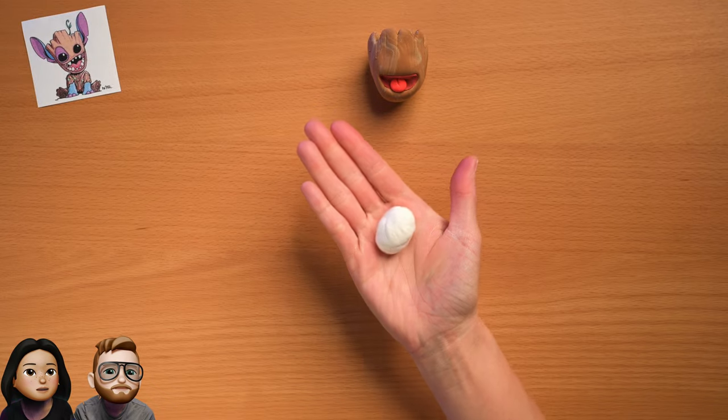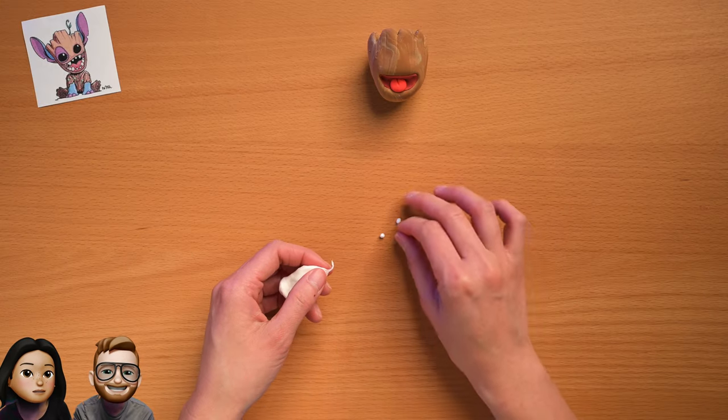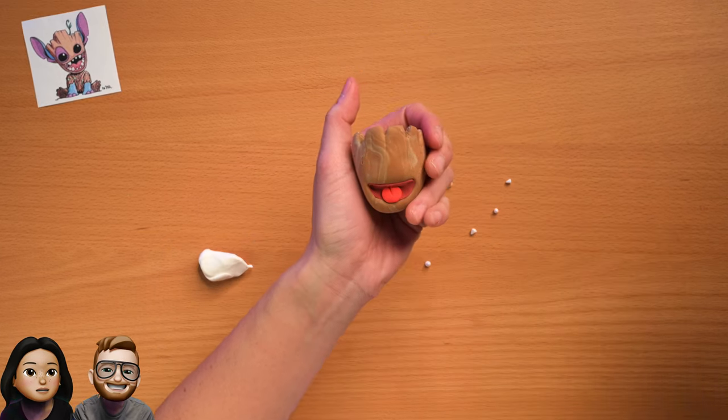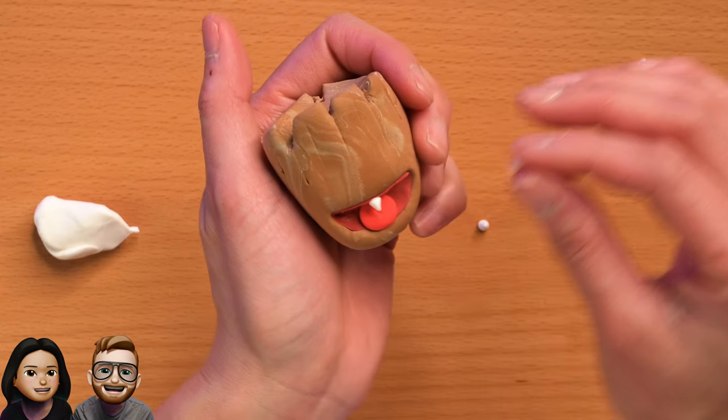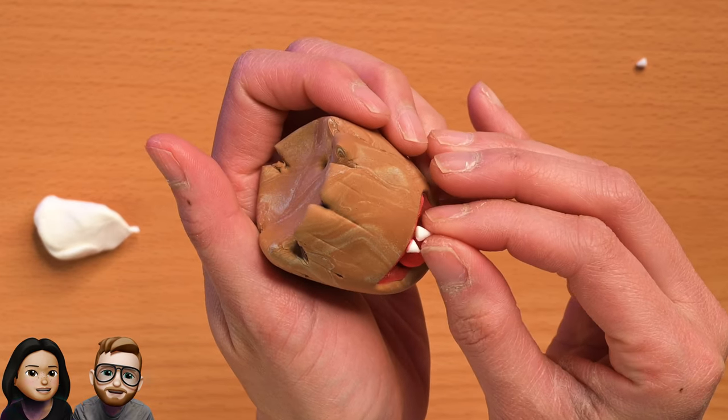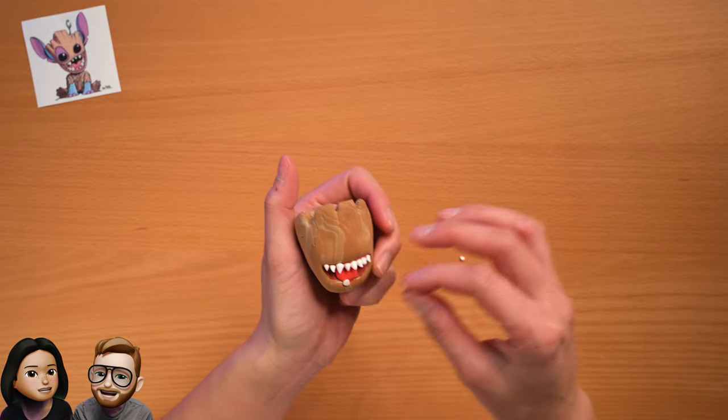And then next up, we're going to do his little teeth. So this is more Stitch, Stitch's teeth. He's kind of like an alien, right? Yeah, a little bit. I guess they both come from an alien world, really, when you think about it, so they're a good match.